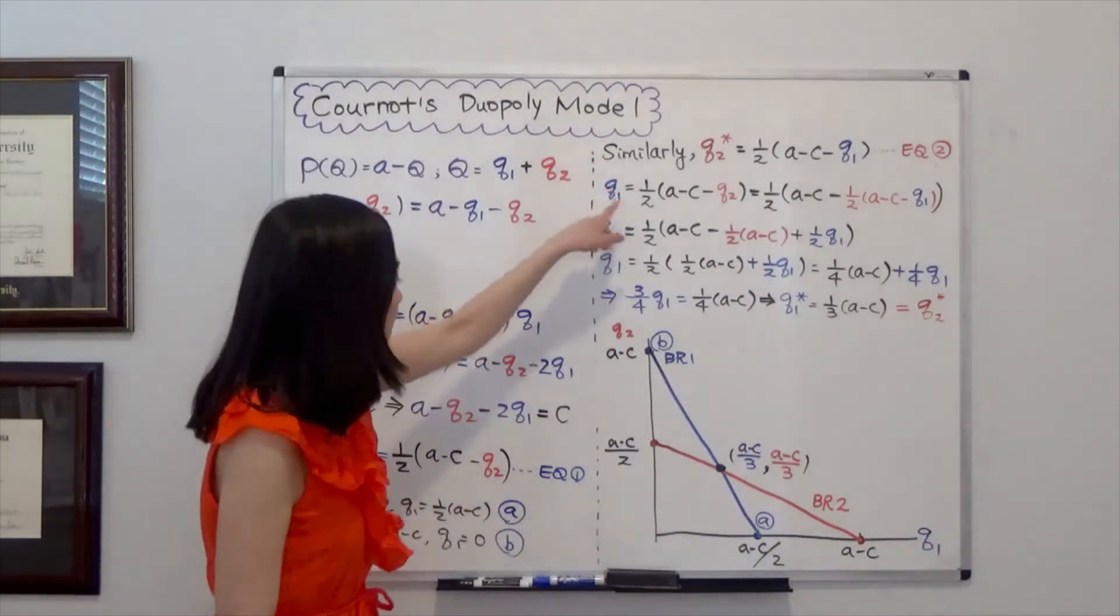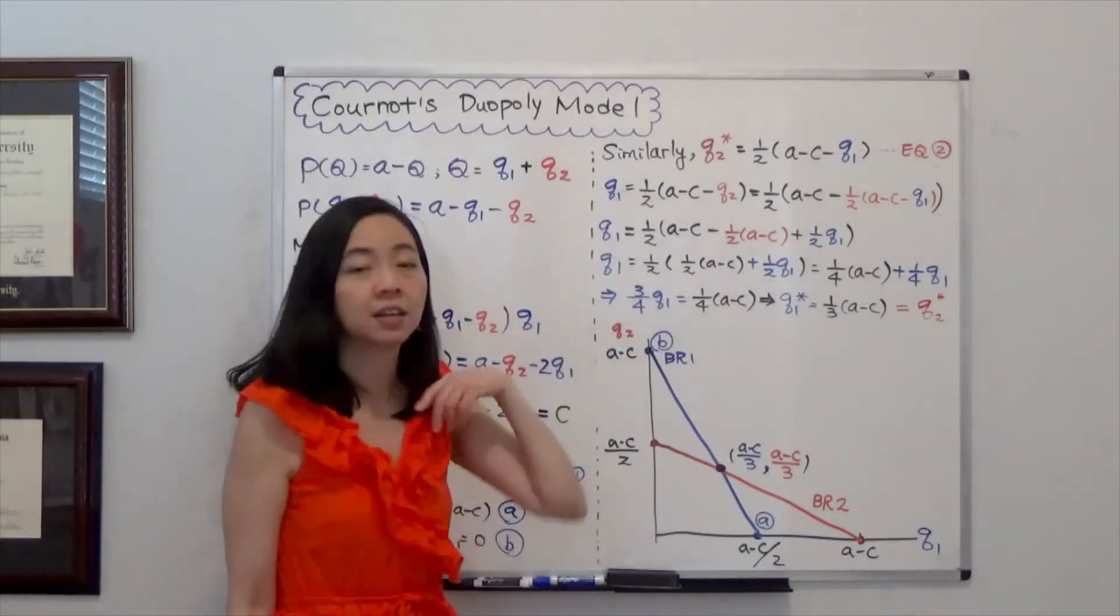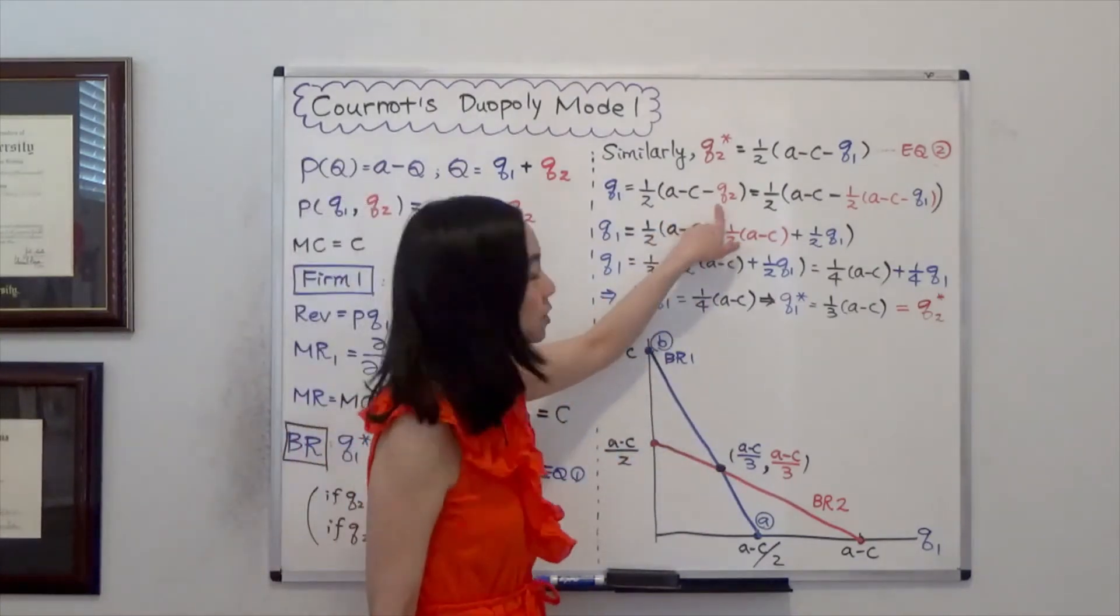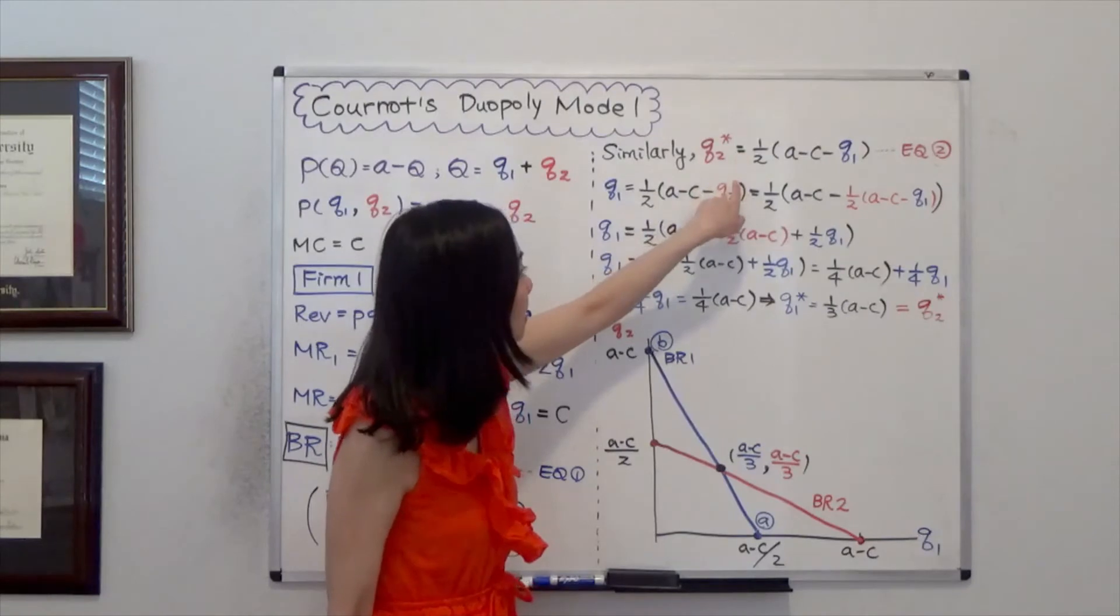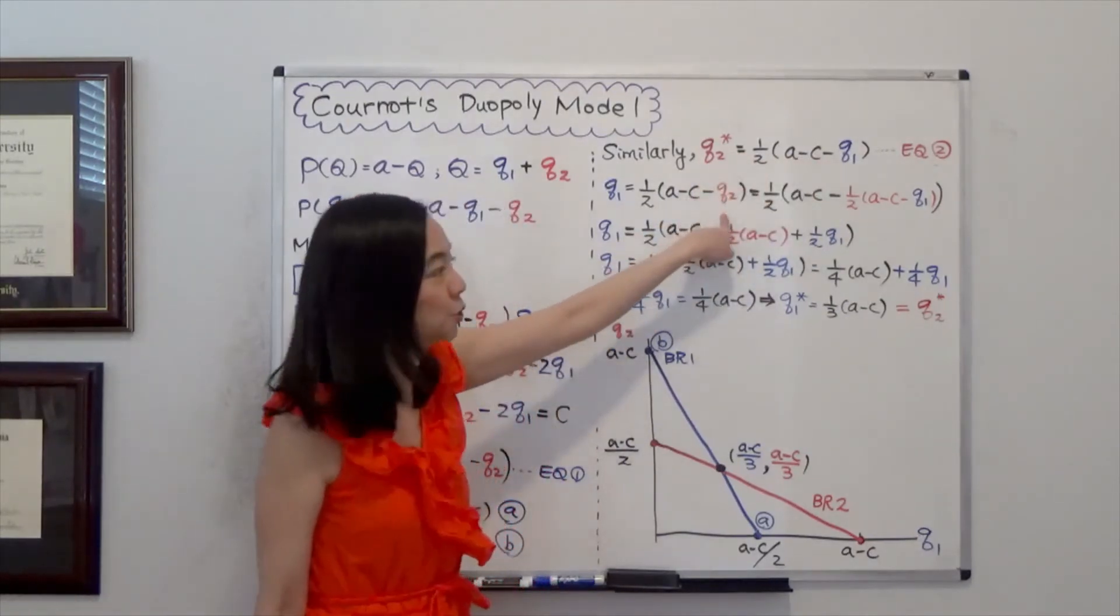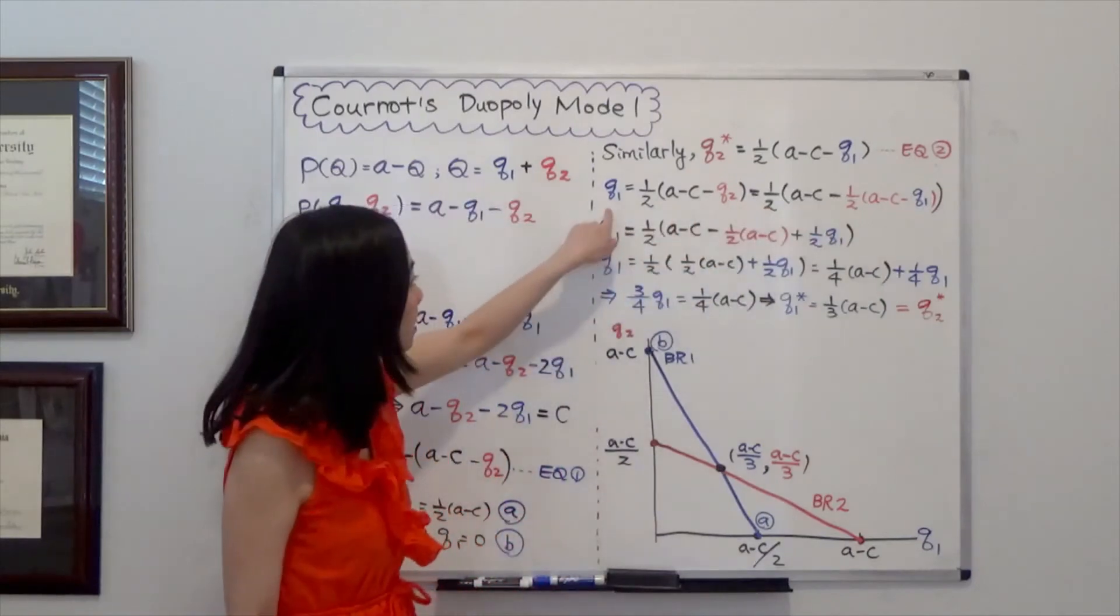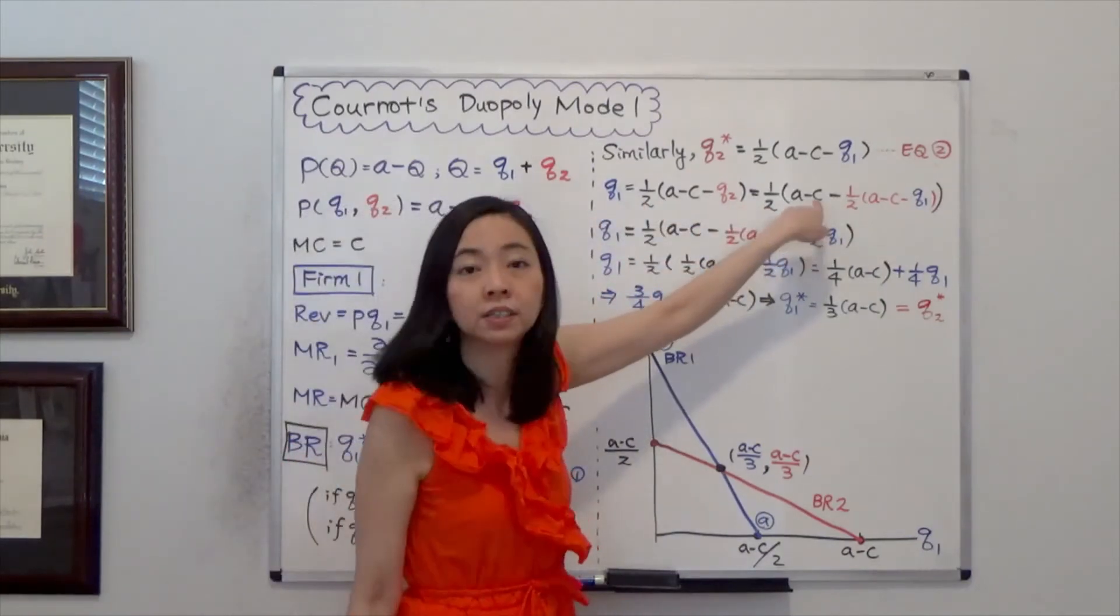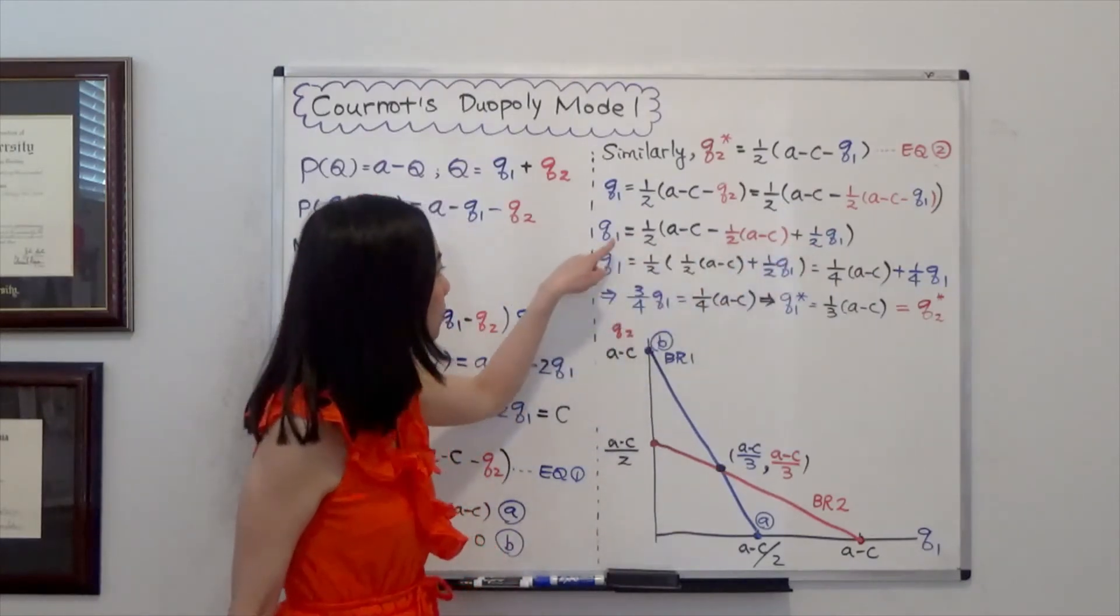So you can see that I'm rewriting equation 1 here. Q1 is equal to a half times A minus C minus Q2. And here Q2 I'm going to plug it in. Plug equation 2 in this Q2. Then I will have one equation and one unknown. This one unknown is Q1. So I rewrite it here. That's the one equation and one unknown.